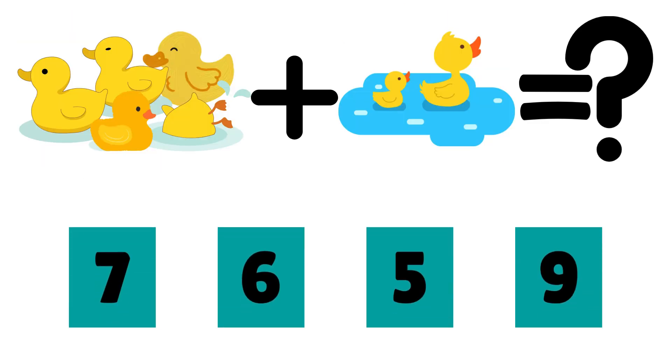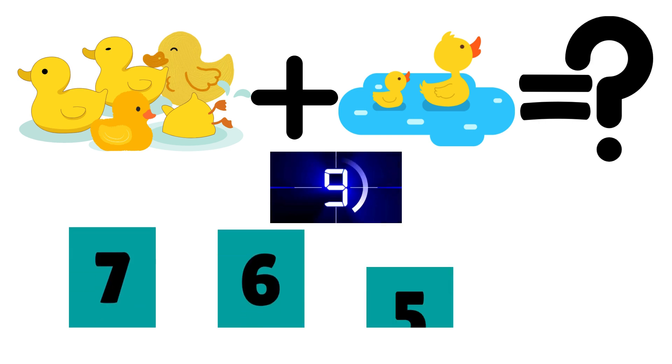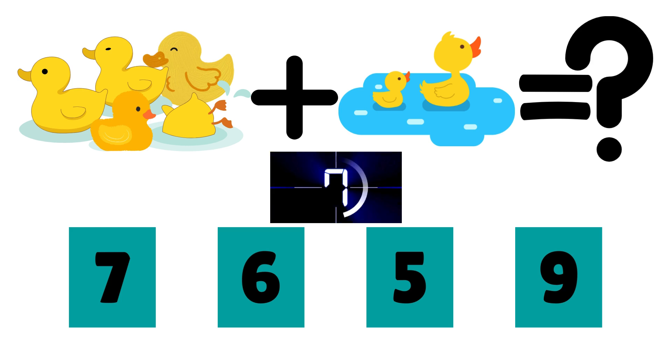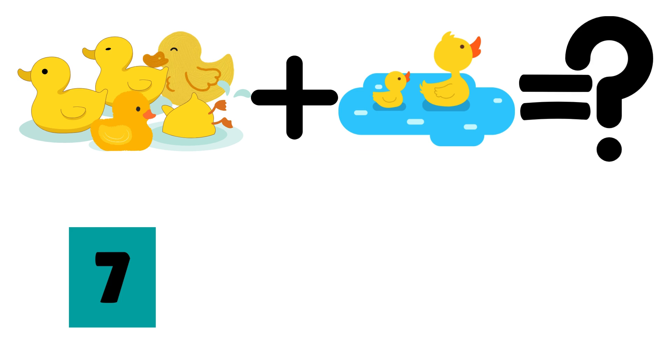Look at the ducks swimming. There are five ducks in the pond and two more ducks join them. How many ducks are there in total? You got it! The answer is seven. Five plus two is equal to seven. Quack!